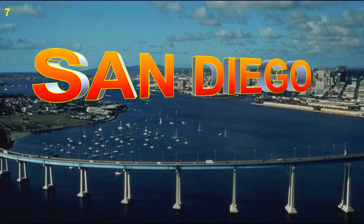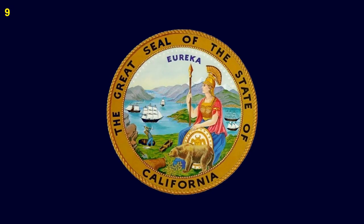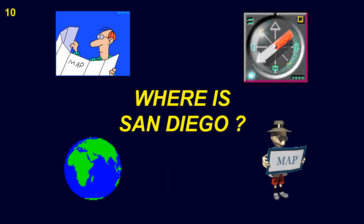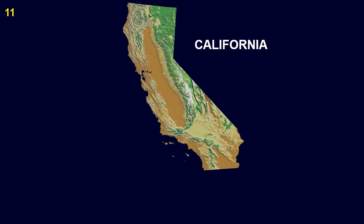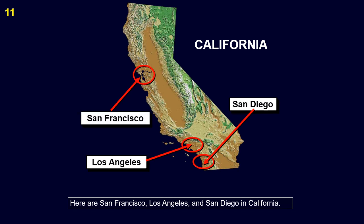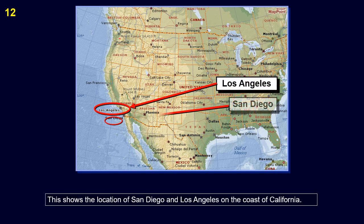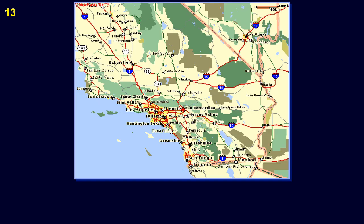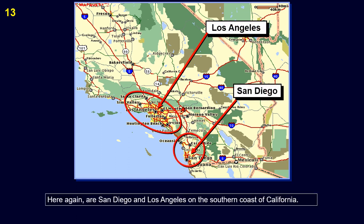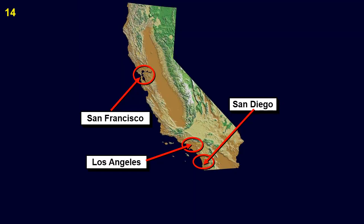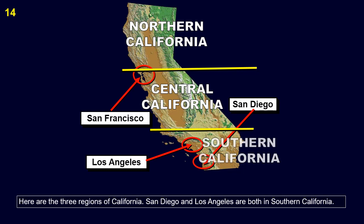San Diego. This is the flag of California. This is the great seal of the state of California. Where is San Diego? San Francisco, Los Angeles, and San Diego are in California. This shows the location of San Diego and Los Angeles on the coast of California. Here again are San Diego and Los Angeles on the southern coast of California. These are the three regions of California.